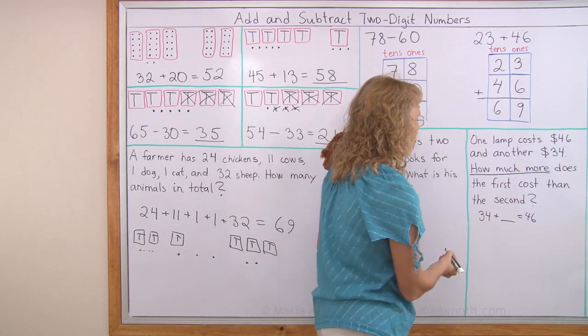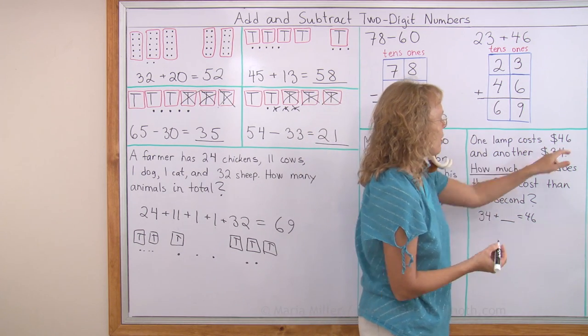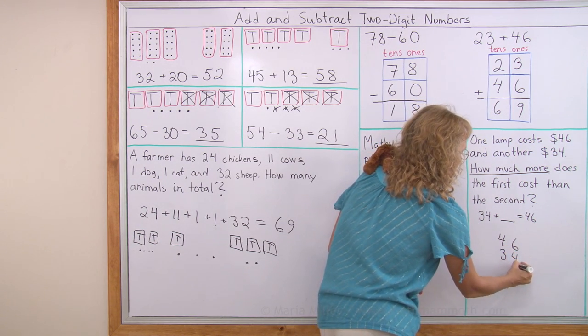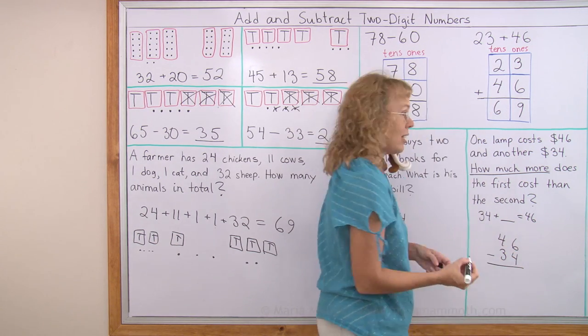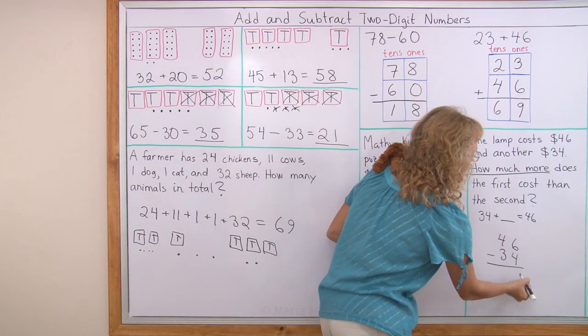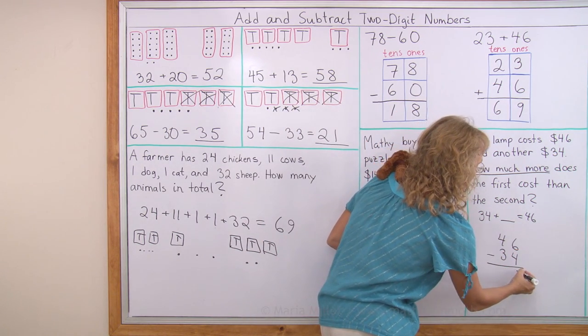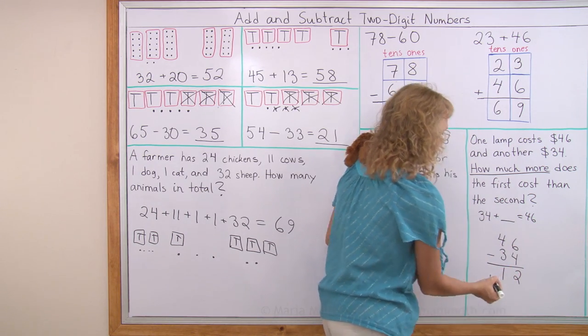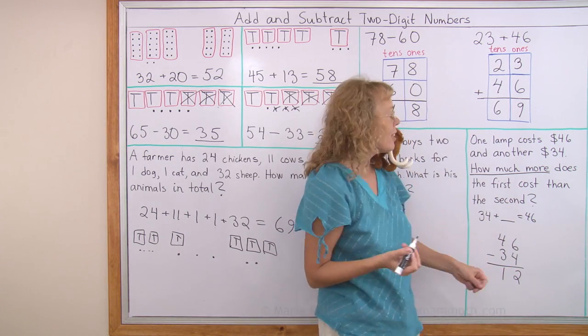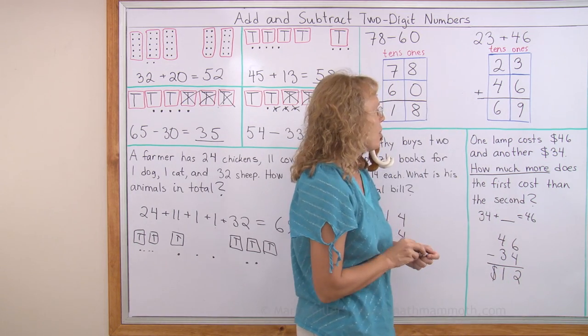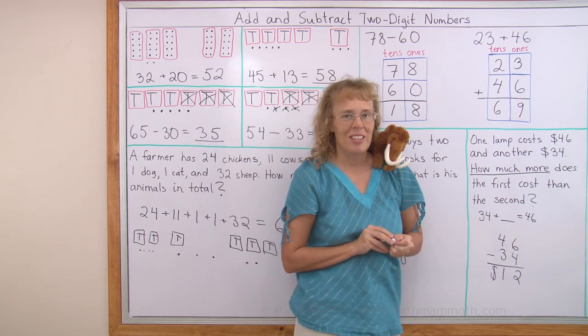But I'm gonna solve it this time by subtracting those numbers to find how many more, how much more. For subtraction. I need to first write the bigger number. Then under it I will write the smaller number. Then a line and minus. And now I subtract like I did here. I subtract the ones. 6 minus 4 equals 2. Then I subtract the tens. 4 minus 3 equals 1. So the answer is 12. $12 in this case. The first lamp costs $12 more than the second.